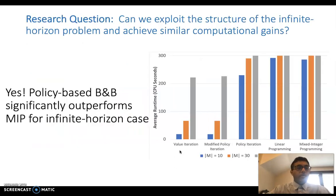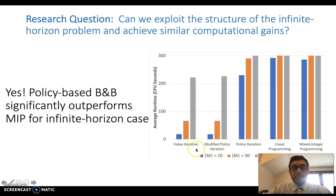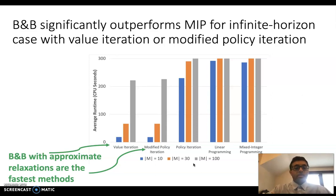Putting it all together, we implemented all different versions of our algorithm — value iteration, modified policy iteration, policy iteration, and linear programming — along with the MIP method that is the current state of the art. We found that modified policy iteration and value iteration significantly outperform the current state of the art, giving us a lot of hope that our algorithm can be used to solve very large problems.